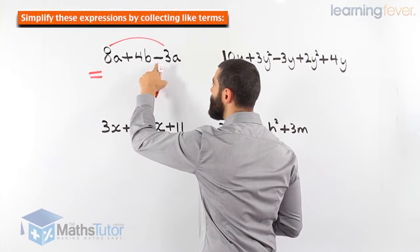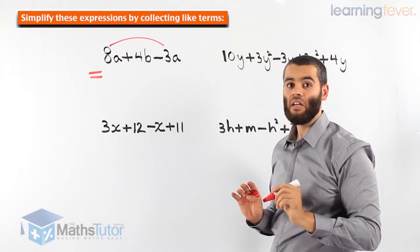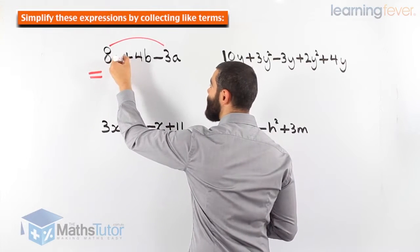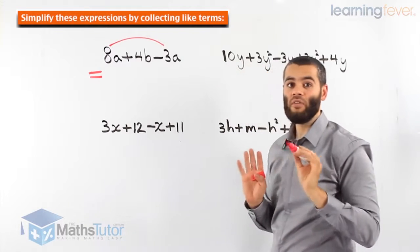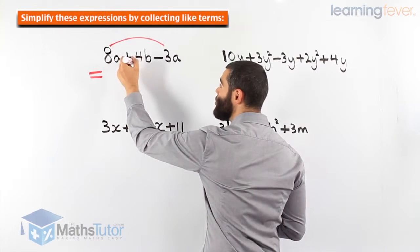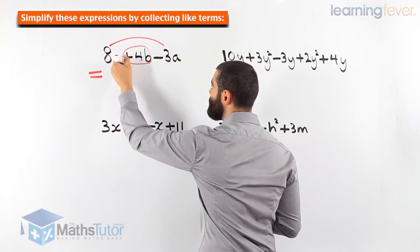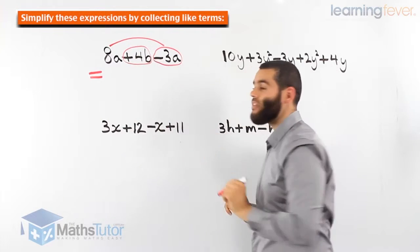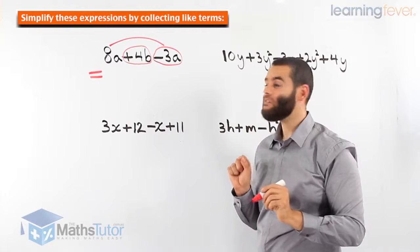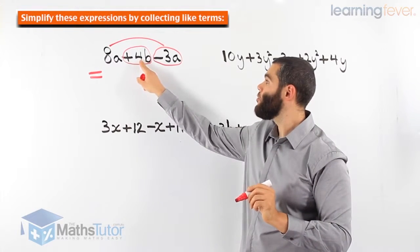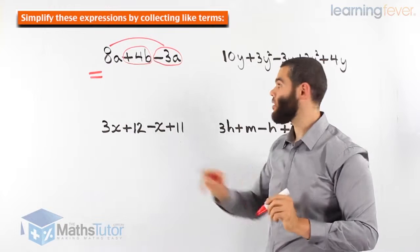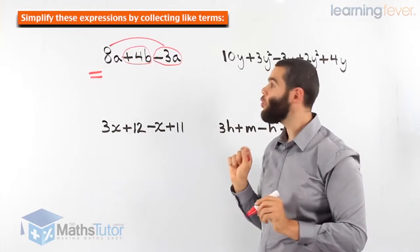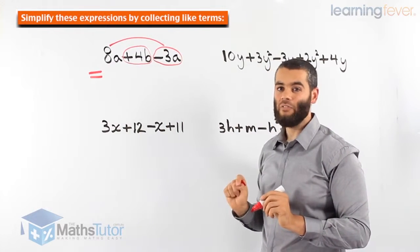8a plus 4b minus 3a. A lot of questions I've seen where students make mistakes — they think they have to go 8a plus 3a. No. You've got to be very careful. That plus belongs to the 4b, and that minus belongs to the 3a. A rule of thumb you need to remember: the symbol always belongs — it's attached to the term after it. Very important. The plus is attached to the 4b, the minus is attached to the 3a. The symbol always is attached to the term that goes after it.